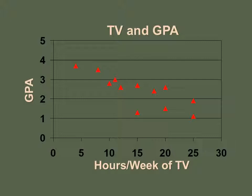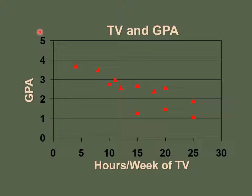We plot those points with the x-axis going from 0 to 30 counted by fives, and the y-axis (GPA) from 0 to 5 counted by ones. As you can see, the more hours of TV you watch, the lower your GPA goes. We would say this is a negative correlation because our data is trending downward.